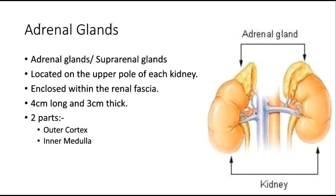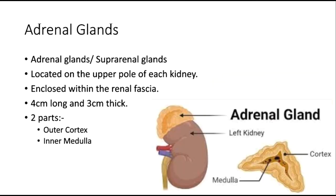Adrenal glands. They are so named because they are situated near the kidneys. Also called the suprarenal glands, they are located on the upper pole of each kidney, enclosed within the renal fascia, and are 4 cm long and 3 cm thick. They have two parts: the outer cortex and the inner medulla.